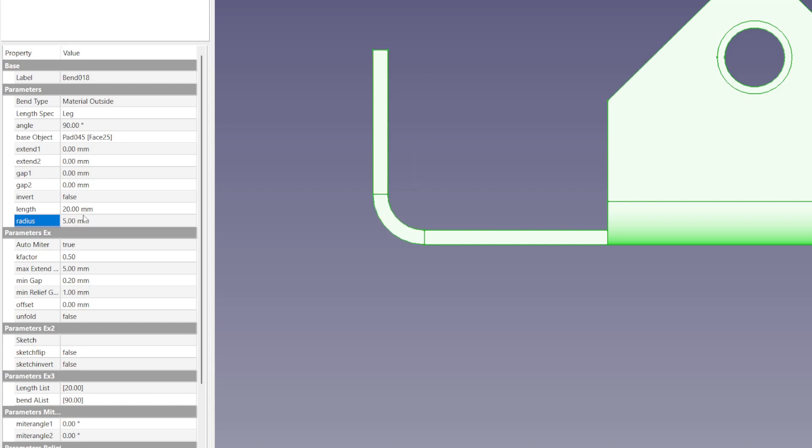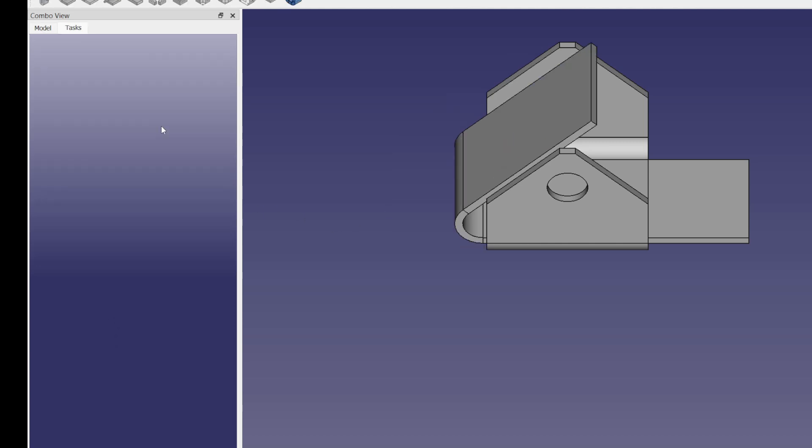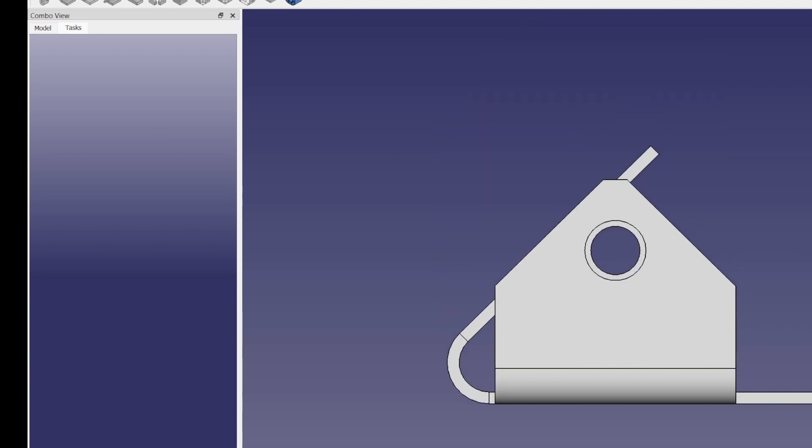The only sheet metal feature left to change is the angle. Essentially, bends are just length, radius, and angle. This space here is actually a pad, a core feature to FreeCAD. I'm going to make it smaller so that the heel lines up with the top of the foot.